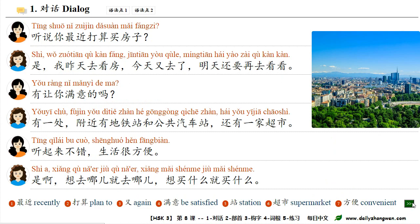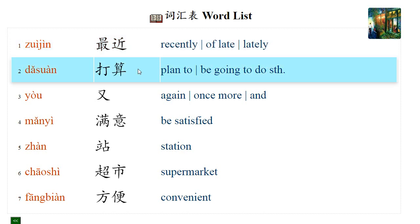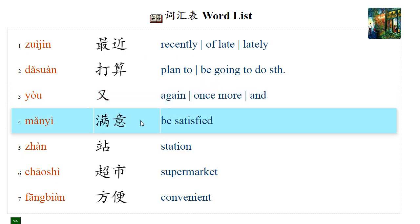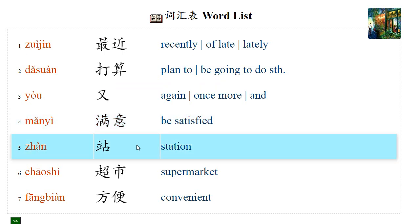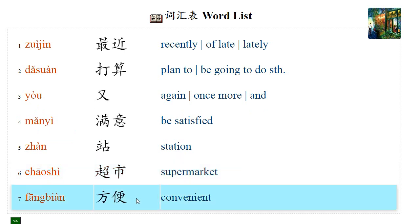Part 1, 词汇表. 最近 (recently). 打算 (to plan, be going to do something). 又 (again, once more). 满意 (be satisfied). 车站 (bus station). 超市 (supermarket). 方便 (convenient).